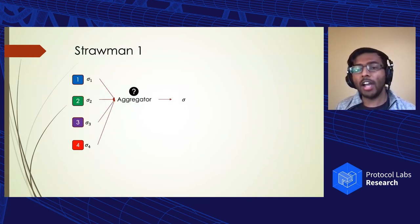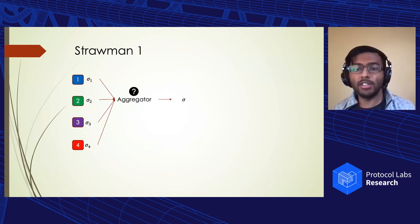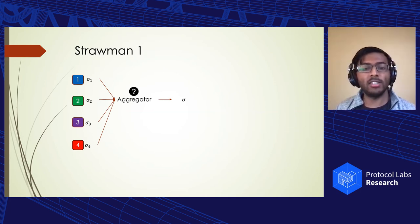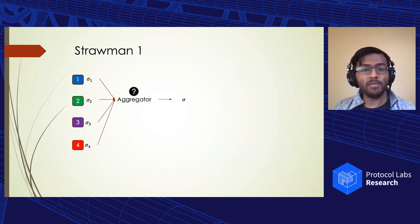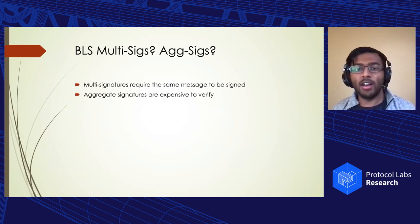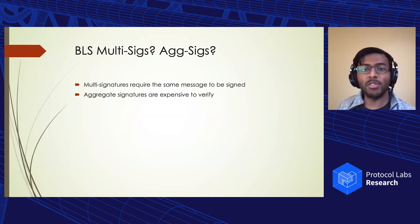So before I show you the actual no-commit proof construction, I'm going to show some straw man approaches. Let's look at a naive way to try to construct these no-commit proofs. Here in this example, we're going to denote each QC using a different color for clarity. For this straw man, we're going to sign each QC view number, getting sigma one, sigma two, sigma three, sigma four. And we're going to try to aggregate these signatures into one signature. The question here is whether we can actually aggregate sigma one through sigma four into one signature easily, maybe using something like an aggregator. So you're probably thinking, let's use multi-signatures or better yet, aggregate signatures.